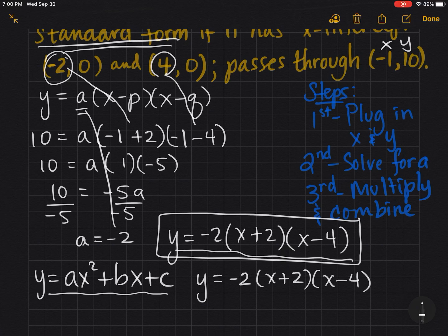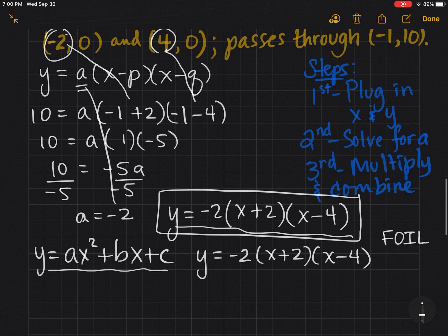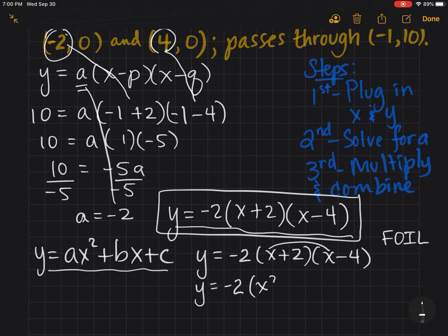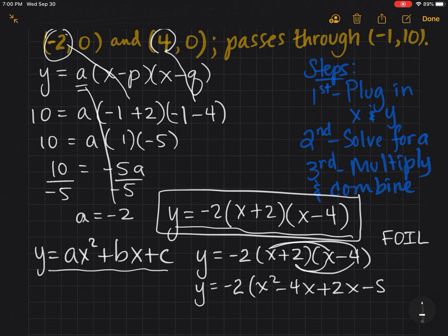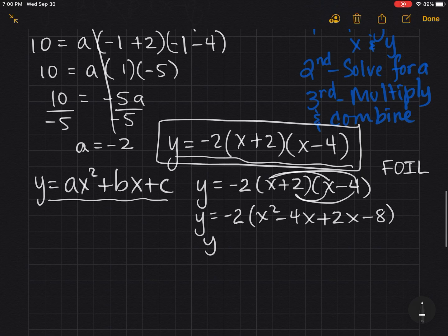Hopefully you remember that from algebra, but I'll refresh your memory. FOIL stands for first, outer, inner, last. So we do the FOIL first, leave the -2 out there. First is x², outer is -4x, inner is +2x, and last is -8. I hope that's coming back.